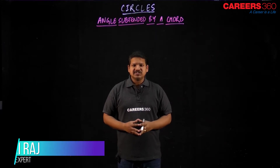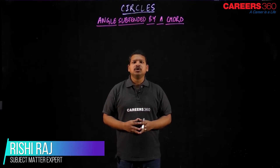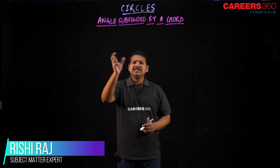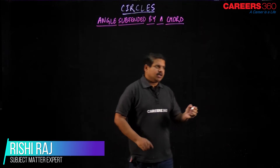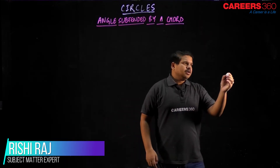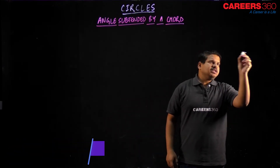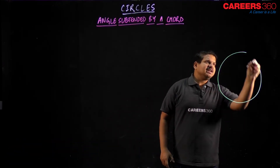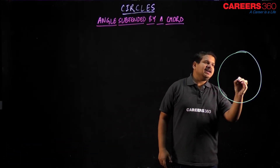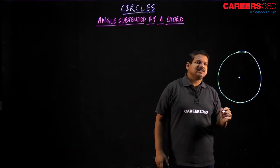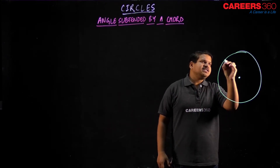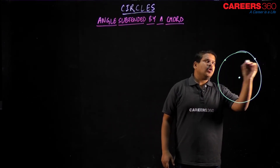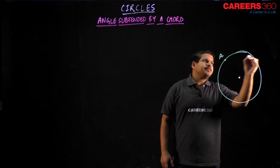Welcome back everyone. In this session we are going to look upon angle subtended by a chord. See, this is a circle and let us say this is the center and let us say this is a chord AB.